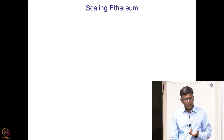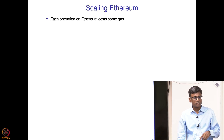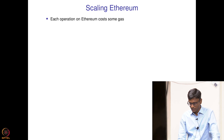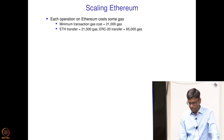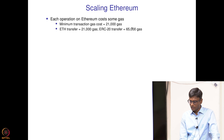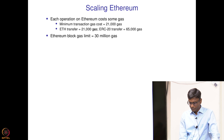In this lecture I want to talk about something called Ethereum rollups, which are a scaling technology for Ethereum. Each operation on Ethereum costs some gas. The minimum transaction gas cost is 21,000 gas. An Ethereum transfer costs 21,000 gas, an ERC-20 token transfer costs 65,000 gas, and the block gas limit in Ethereum is 30 million gas.